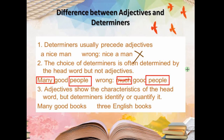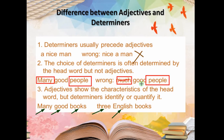Adjectives show the characteristics of the head word, but determiners identify or quantify it. For example: 'good books' — 'good' is an adjective telling how the books are. But 'many books' — 'many' is a determiner telling how many books. Similarly, 'three English books' — 'English' is an adjective (which books?), and 'three' is a determiner (quantity). Adjectives and determiners are sometimes almost the same, but not always.